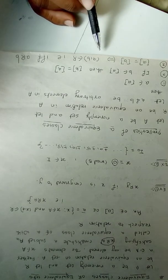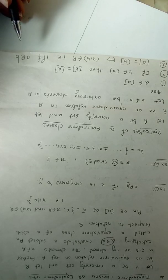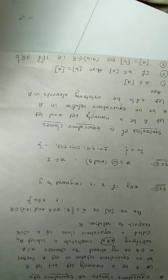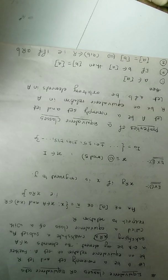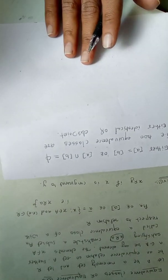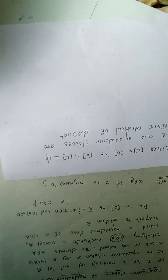For property three: class of A equals class of B if and only if (a, b) belongs to R, that is, a is related to b. If a is related to b, the classes of both a and b are the same. For property four — very important — two classes are either identical or disjoint. It cannot happen that only one, two, or three elements are common between them; they must be either identical or disjoint, and no other option.